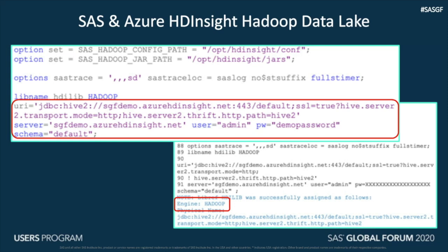'Default' is the name of a Hive schema we are pointing to in this example. Two environment variables have to be set: one to a local folder containing all the Hadoop JARs retrieved from the HDInsight cluster, specified using SAS_HADOOP_JAR_PATH, and the other for the config XML files for the Hadoop cluster, specified using SAS_HADOOP_CONFIG_PATH.